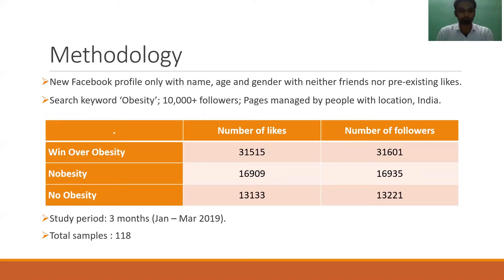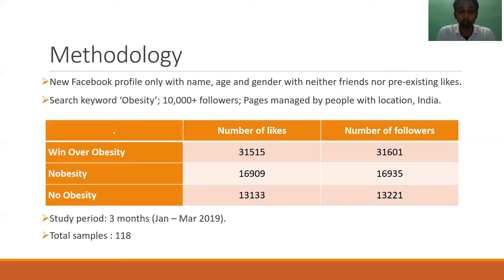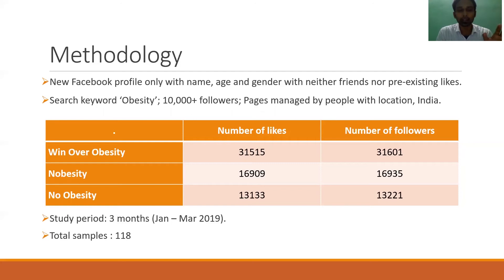Regarding the methodology of my study: the Facebook algorithm for search is user-centric, so search results vary from person to person based on their previous use, profile information, and network of friends. Therefore, a new Facebook profile was created with minimal biographical information like name, age, and gender. The researchers also ensured the new profile had neither friends nor any pre-existing likes, and erased cookies and disabled location services prior to conducting the search.